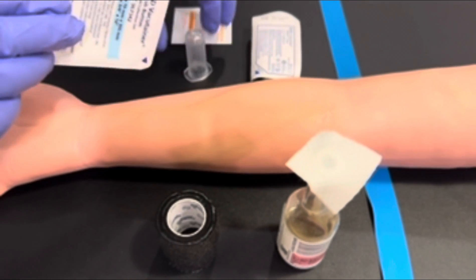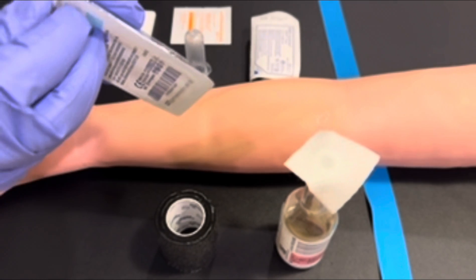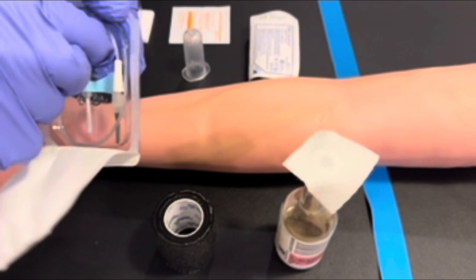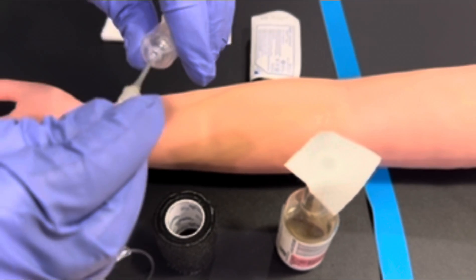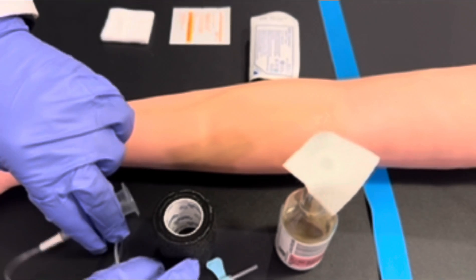Next, you are going to select your butterfly needle device and connect your 23-gauge size butterfly that we're using today and assemble the secondary needle into your vacutainer holder.